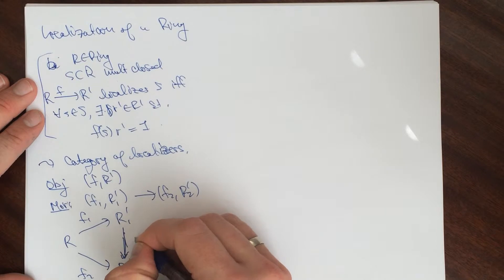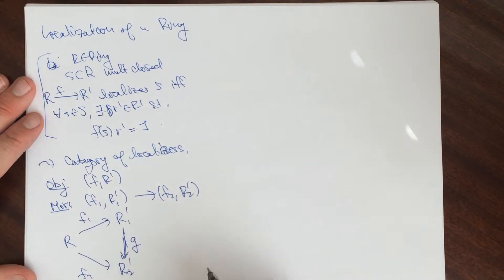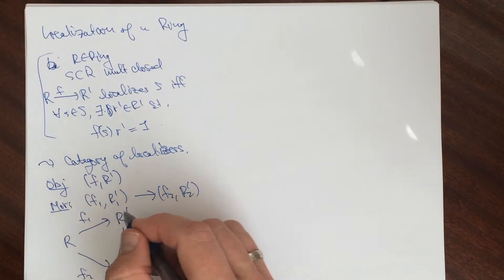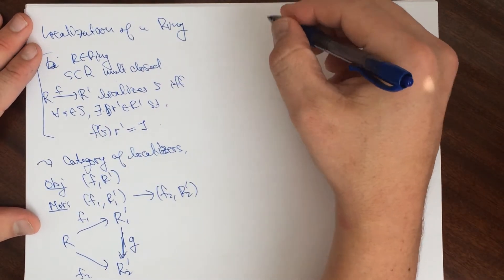They're just going to be maps of rings here, G, such that this diagram commutes. So they're just morphisms in the over category here. Then the claim.